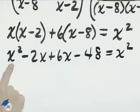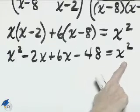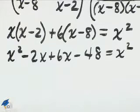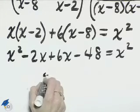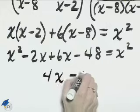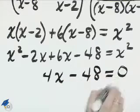If we subtract x squared over to the right, then we'll have 0 on the right, and x squared eliminates. Negative 2x plus 6x is 4x minus 48 equals 0.